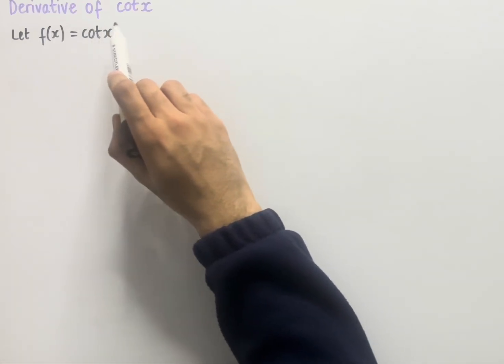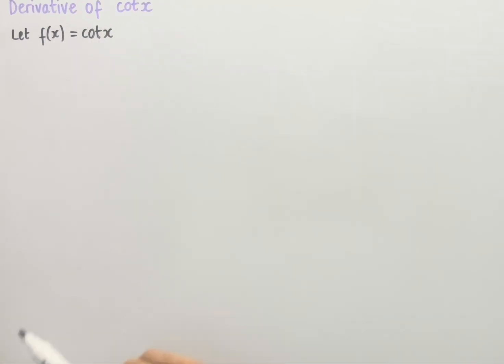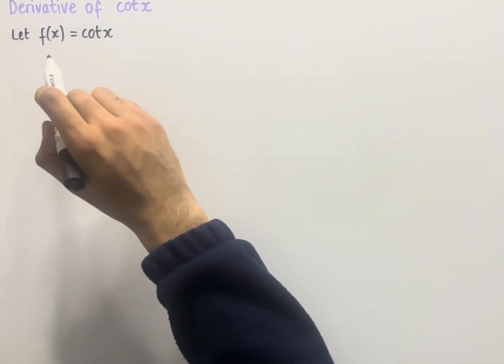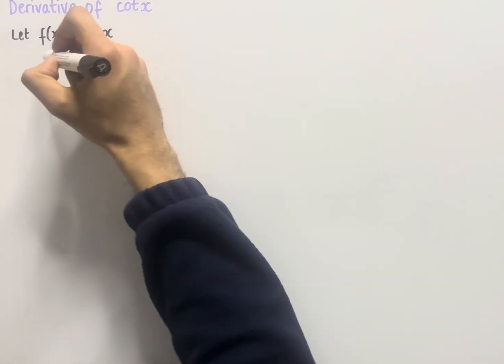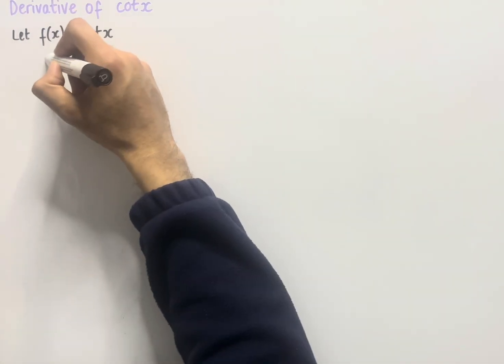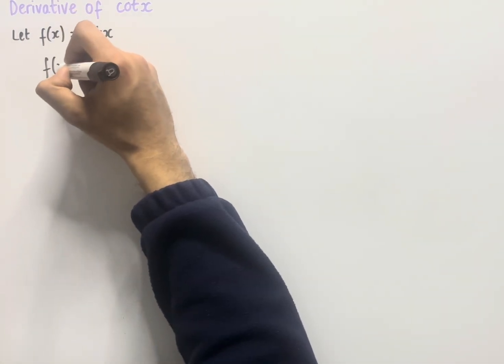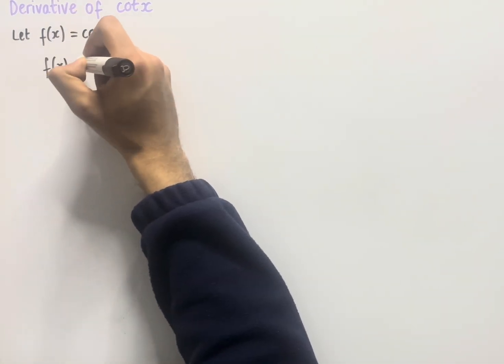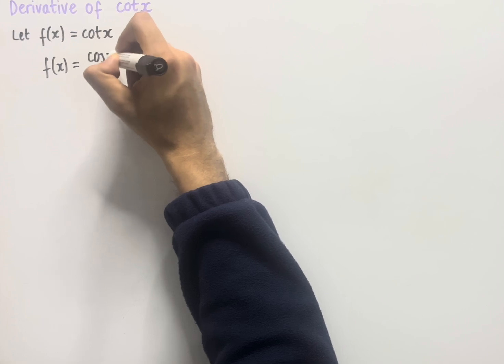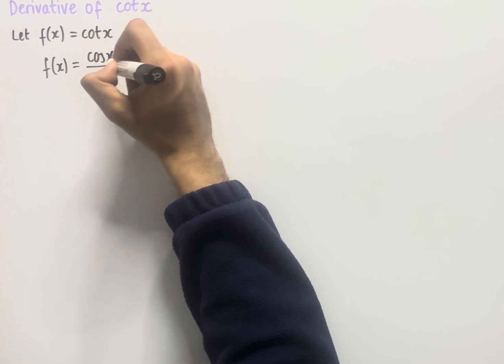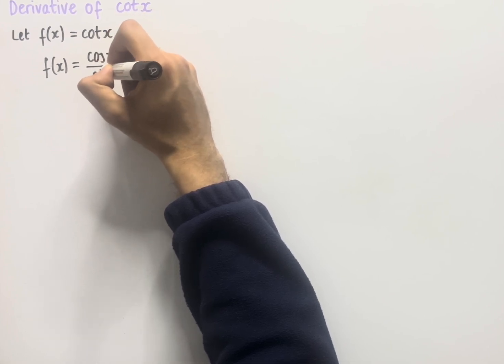Let's look at the derivative of cot x. So if we let f of x equal to cot x, we can first rewrite this as cot x equals cos x over sin x.